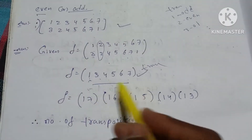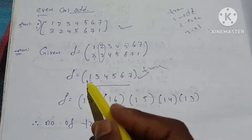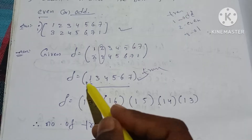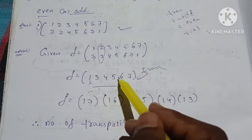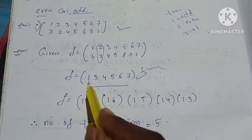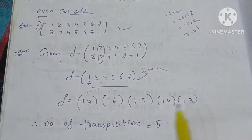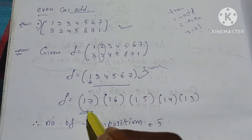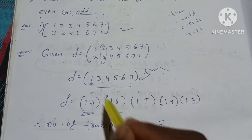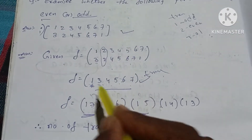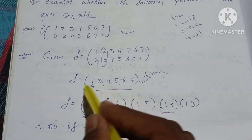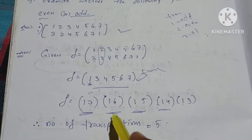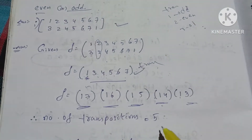We are going to break the cycle back into transpositions. 1-7, 1-6, 1-5, 1-4, 1-3. Then 3-4, 4-5. We are going to pair each with the first element. So: (1,7) is a transposition, (1,6) is a transposition, (1,5) is a transposition, (1,4) is a transposition, (1,3) is a transposition.